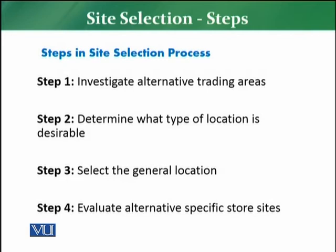Carrying the Walmart example forward — let's say they have identified four areas as trading areas. After that, the next step is to determine what type of location is desirable as per the needs and requirements of the retail store, or as per their strategy. They need to evaluate what kind of location is required: an isolated store, a location inside a mall, inside a plaza, or an outskirt location. So in step two, you identify which type of location is desirable.